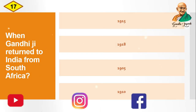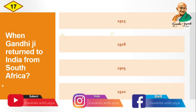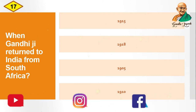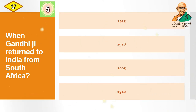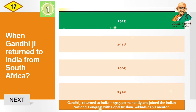Question: When did Gandhiji return to India from South Africa? Options are: 1915, 1918, 1905, 1910. The correct answer is 1915. Gandhiji returned to India in 1915 and joined the Indian National Congress with Gopal Krishna Gokhale as his mentor.